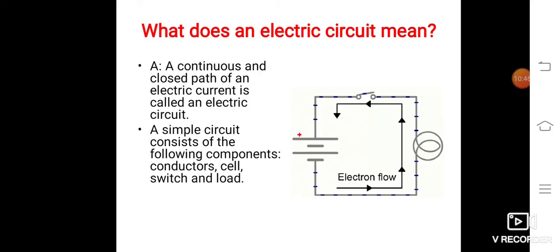The next important question is, what does an electric circuit mean? The answer is, a continuous and closed path of an electric current is called as electric circuit. A simple circuit consists of the following components, such as conductors, cell, switch, and load.